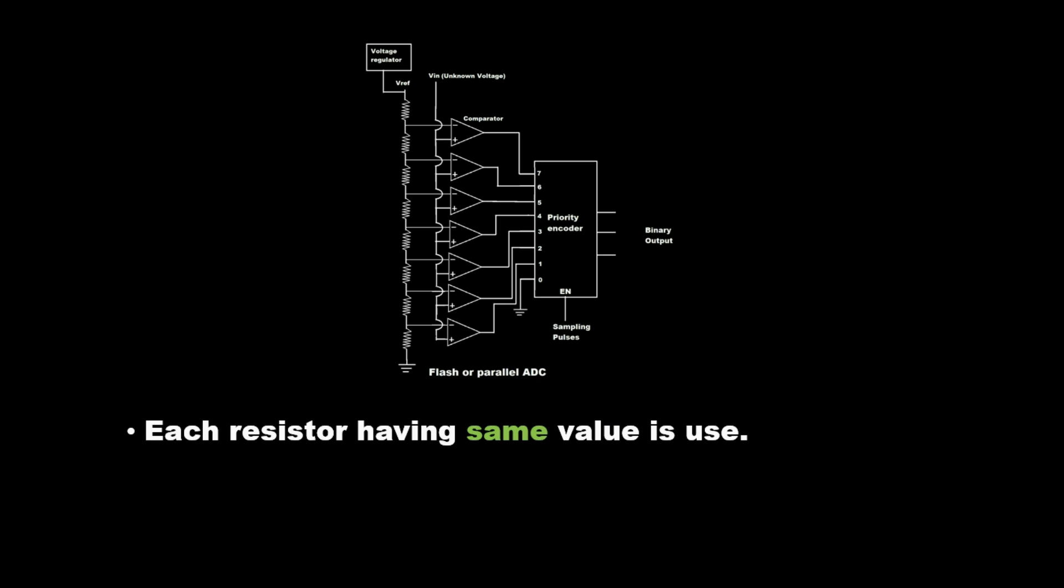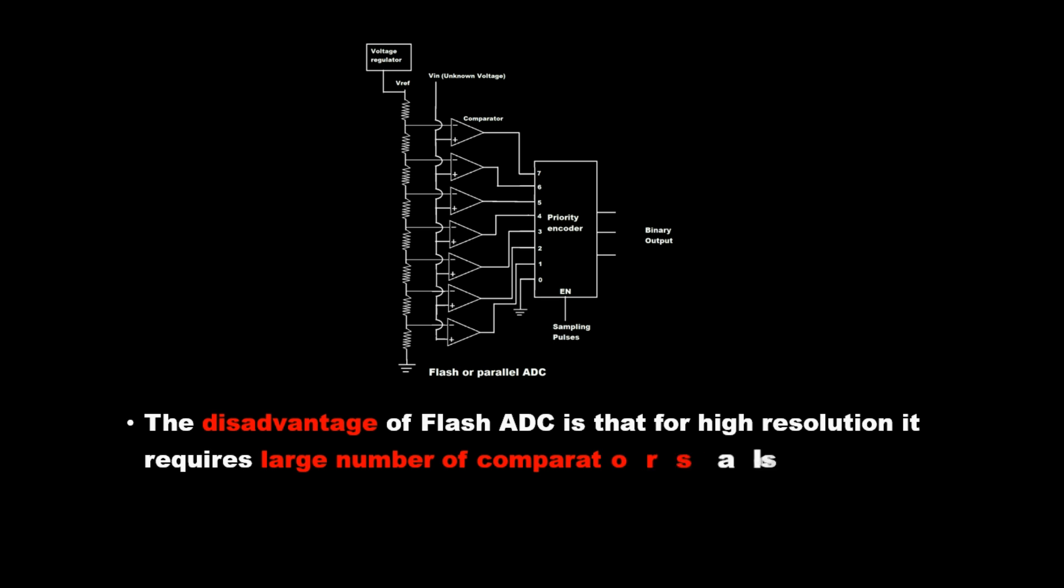Each resistor having the same value is used. The disadvantage of Flash ADC is that for high resolution, it requires a large number of comparators. It also consumes large power and is bigger in size.